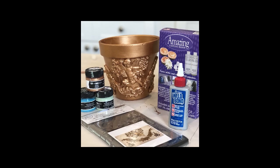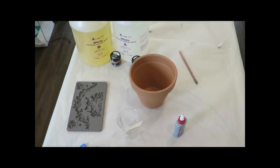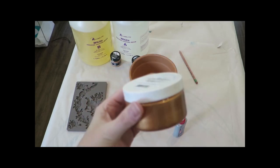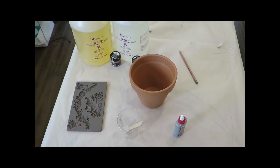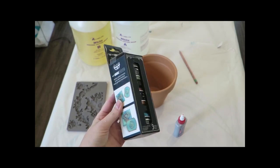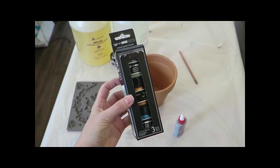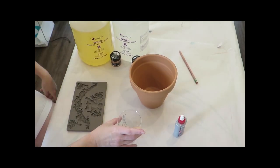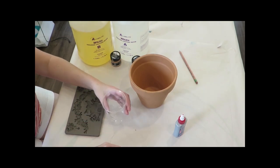The first thing we'll do is use these molds - this is the Divine Floral, it's a newer release from Prima. We're going to use the Amazing Casting Resin, it's a white resin. We'll use Weld Bond glue to glue it on.